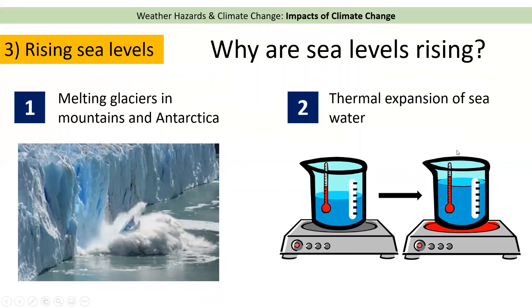The second reason is that when water gets warmer — and we know the earth is getting hotter, so seas and oceans are also getting hotter — it leads to water taking up more space. We call that thermal expansion. As the water gets hotter it takes up more space, and therefore the sea level rises.